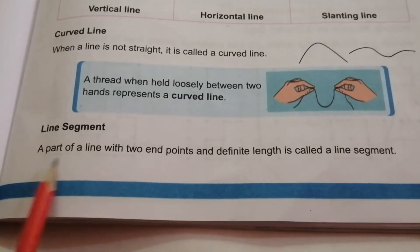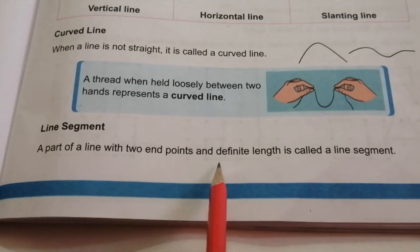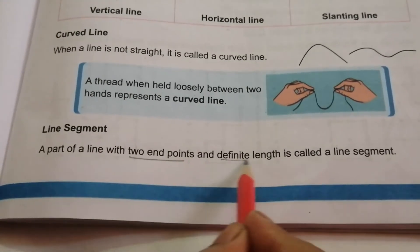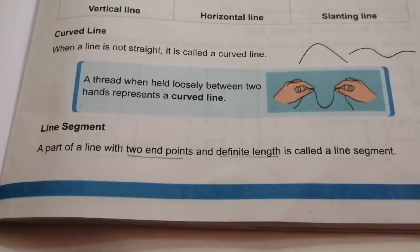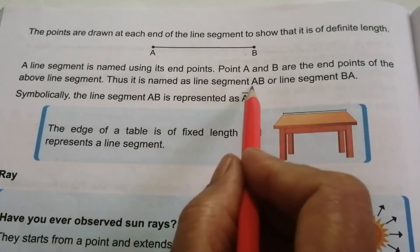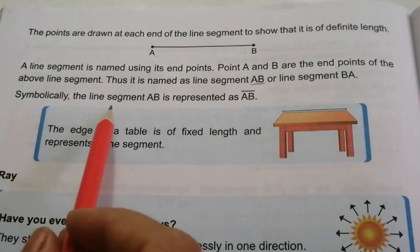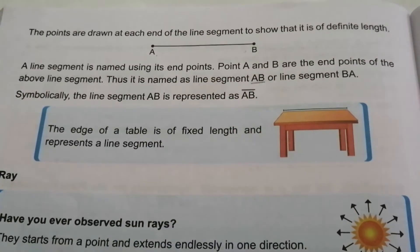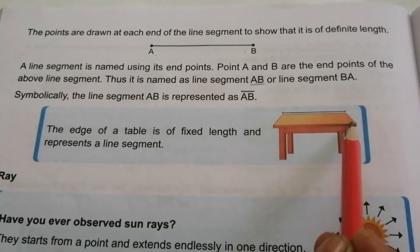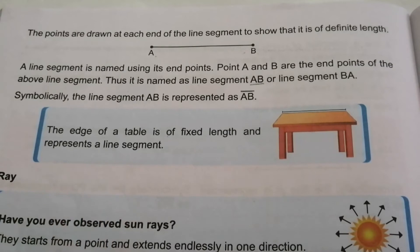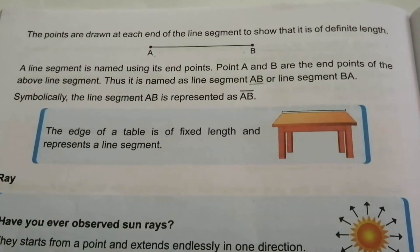Next is a line segment. A part of a line with two endpoints and a definite (fixed) length is called a line segment. Points A and B are the endpoints, so it is named line segment AB or line segment BA. Symbolically, line segment AB is represented as AB with a bar above it. The edge of a table is an example of a line segment.